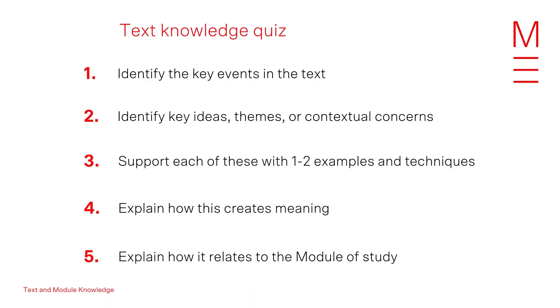If you're time poor, identify specific gaps in your knowledge. Ensure you have a holistic understanding of the texts. Get a friend to quiz you and see if you can: identify the key events; identify the key ideas, themes or contextual concerns in each event; support each theme with at least one example; identify the technique and explain how it creates meaning; and then explain how it relates to the module of study.